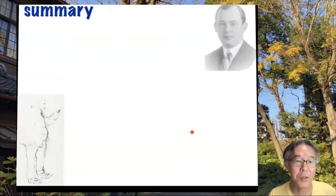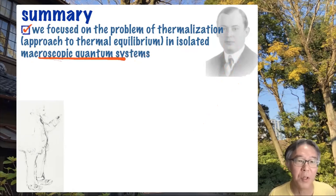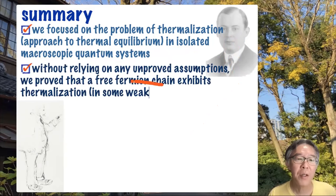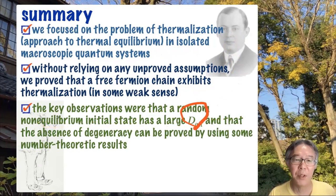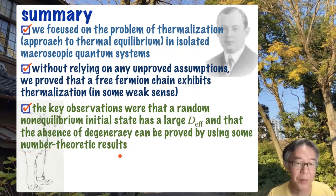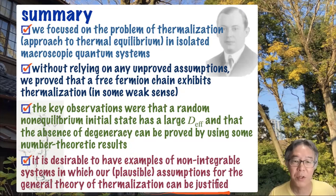This is basically all I wanted to say. Let me give a summary. By the way, this is Professor von Neumann when he did his ETH work. We focused on the problem of thermalization — the approach to thermal equilibrium in isolated macroscopic quantum systems. Without relying on any unproven assumptions, we proved that a free fermion chain exhibits thermalization. The key observations were that a random non-equilibrium initial state has a large effective dimension, and that the absence of degeneracy can be proved using number-theoretic results. These were only for free fermions, but we had some general results. It is desirable to have examples of non-integrable systems in which our plausible assumptions for the general theory of thermalization can be justified. Thank you very much for watching.